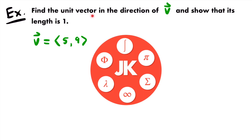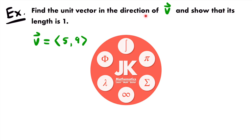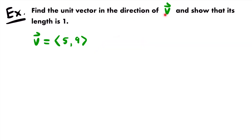Next up we want to find the unit vector in the direction of vector v and show that its length is 1. Our vector v is the position vector of the point 5, 9.